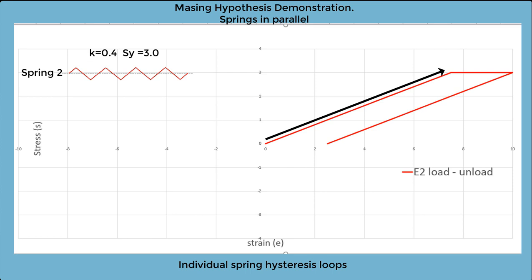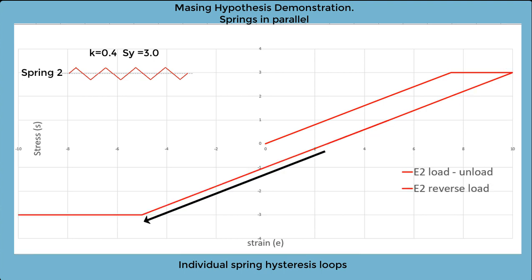And now we repeat the process for spring 2, which has a higher yield stress of 3 units, and the same stiffness. The hysteresis loop for spring 2 is skinnier than for spring 1, because there's less plasticity involved.